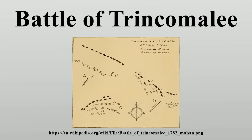France had entered the American Revolutionary War in 1778, and Britain declared war on the Dutch Republic in late 1780 after the Dutch refused to stop trading in military supplies with the French and the Americans. The British had rapidly gained control over most French and Dutch outposts in India when news of these events reached India, spawning the Second Anglo-Mysore War in the process. The French Admiral the Bailli de Suffren was dispatched on a mission to provide military assistance to French colonies in India.